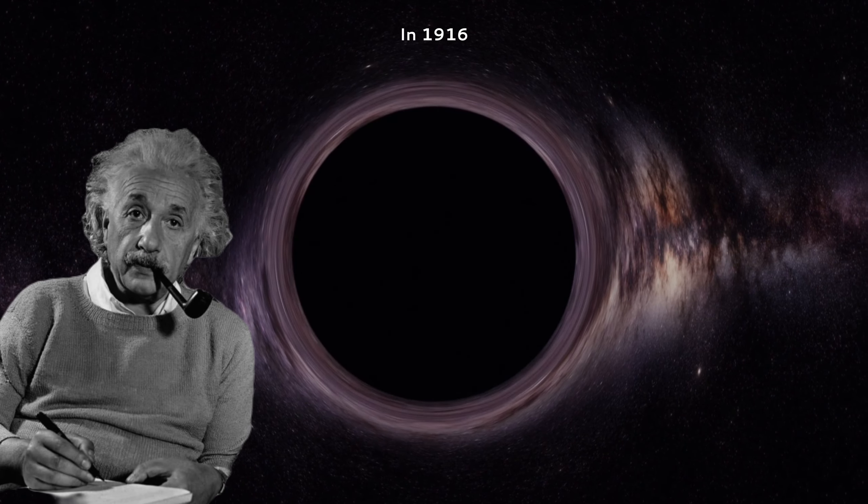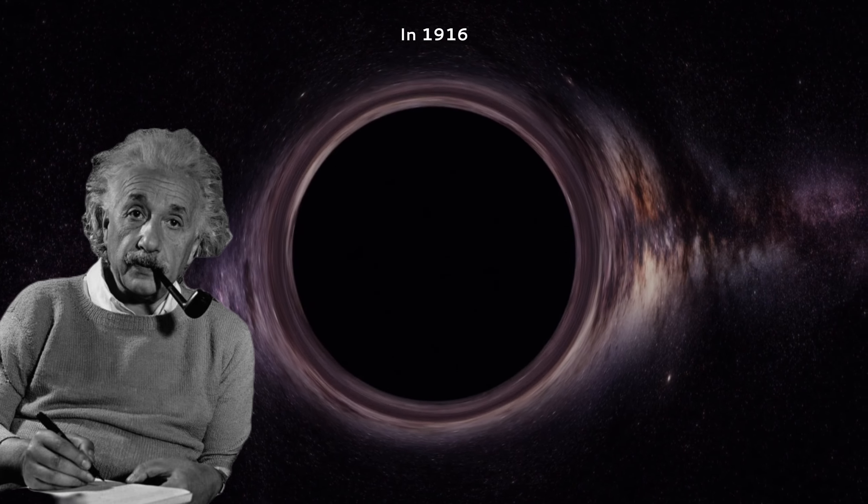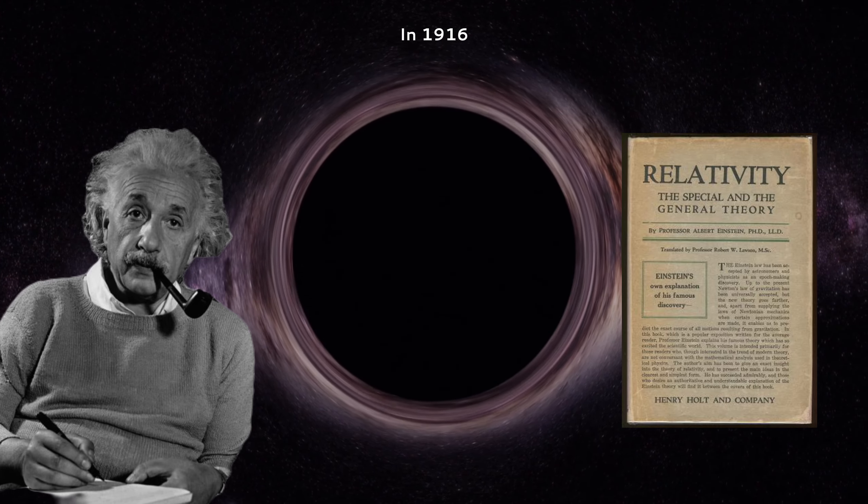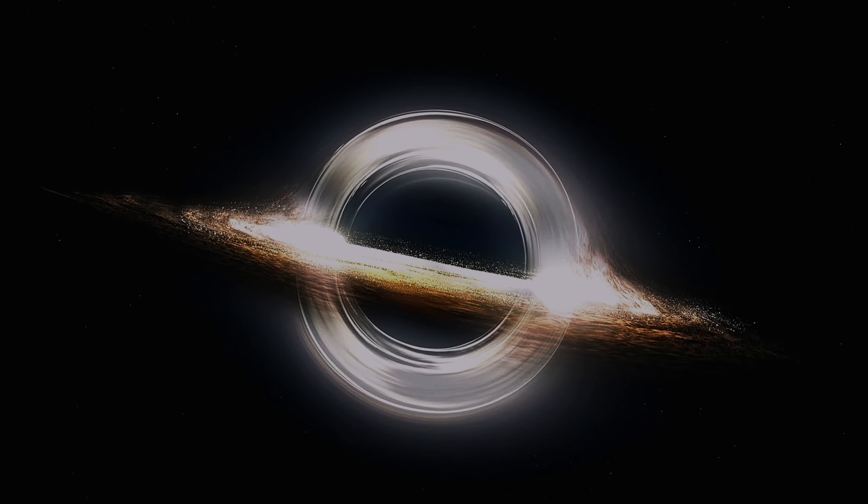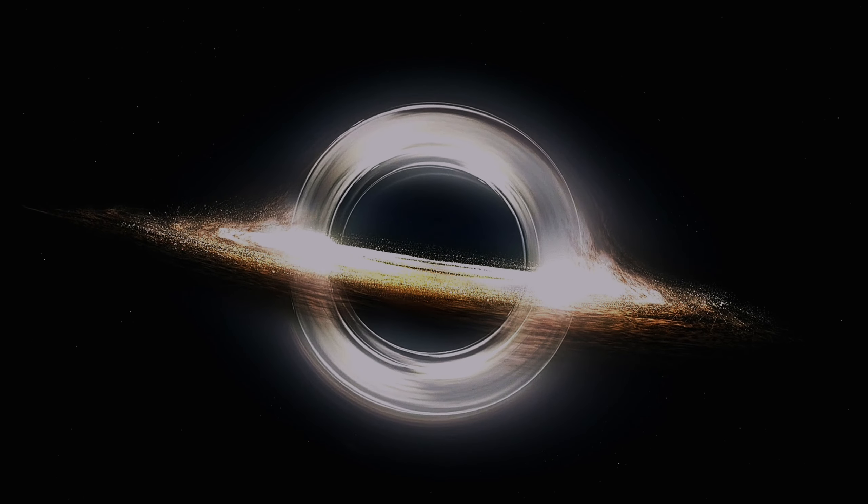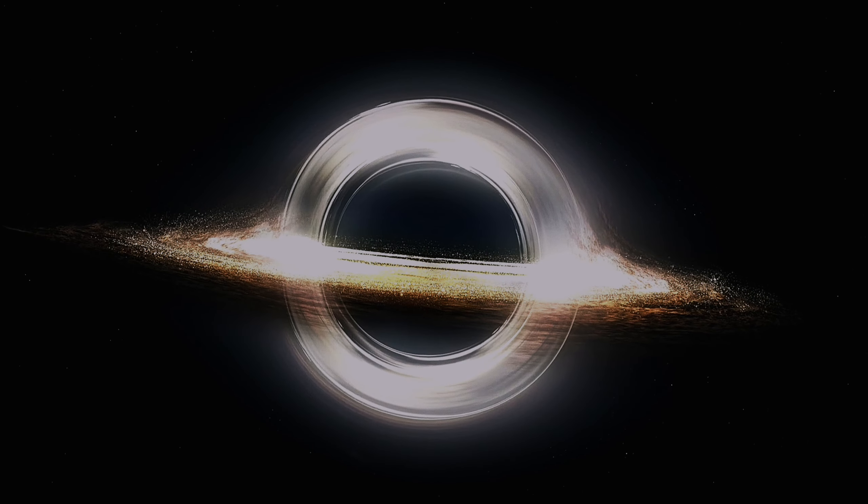In 1916, Albert Einstein first predicted the existence of black holes with his general theory of relativity. Black holes were proved based on observations in Greenwich and Toronto in the early 1970s.